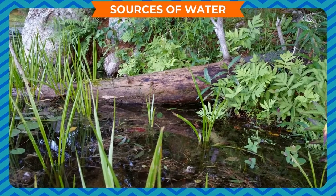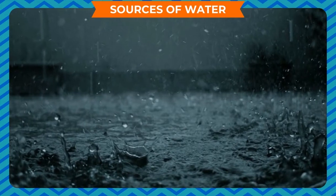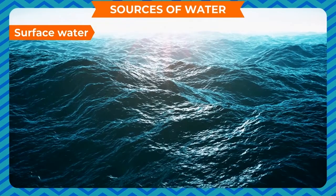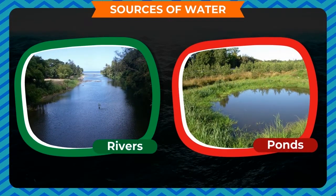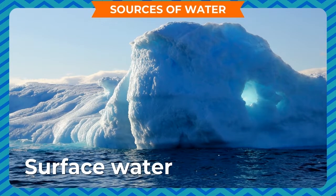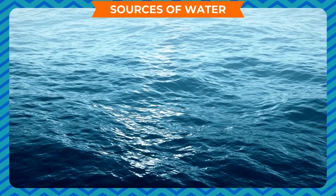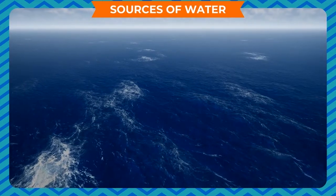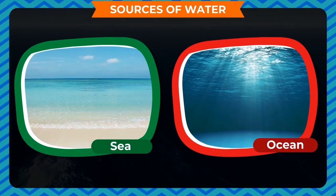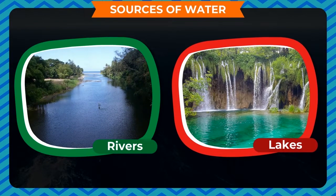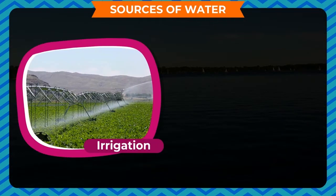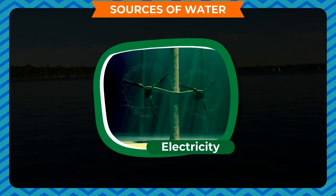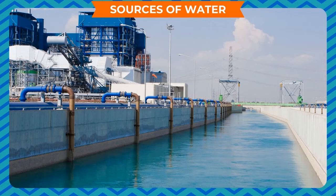Rain water is the main source of groundwater. Surface water is water present in the oceans, seas, rivers, ponds, and other water bodies on the earth. Among these, oceans are the largest source of surface water. Sea and ocean water is salty, whereas water in rivers, lakes, and ponds is not saline. This fresh surface water is used for irrigation, drinking, electricity production in hydropower plants, and industrial purposes.